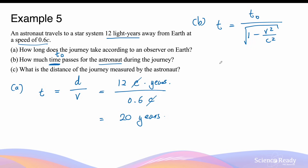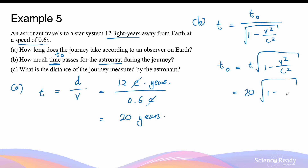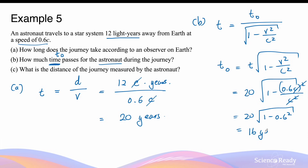The time dilation formula is t equals t0 divided by the square root of 1 minus v squared over c squared. In this question we are finding t0, the time measured by the astronaut. Rearranging gives t0 equals t multiplied by the square root of 1 minus v squared over c squared. t is 20 years from part A, so we have 20 multiplied by the square root of 1 minus 0.6 squared — the c squared cancels — giving a shorter time of 16 years measured by the astronaut on board.